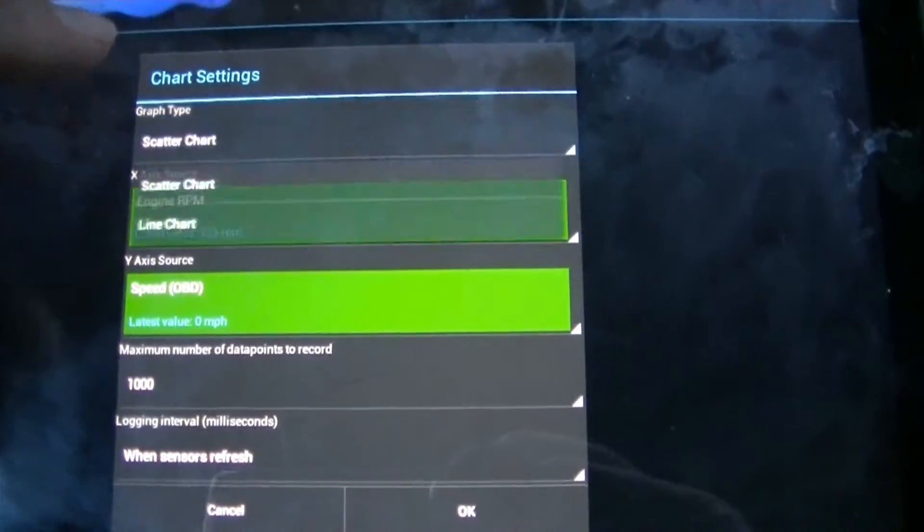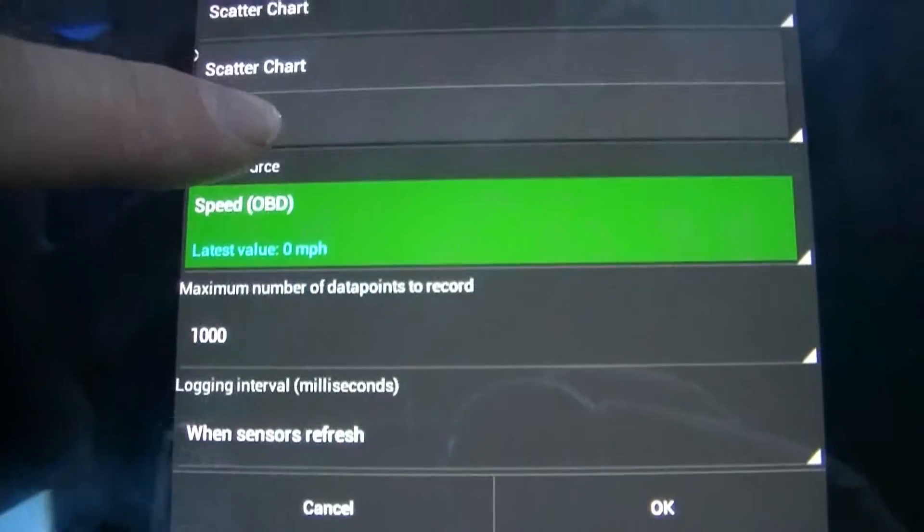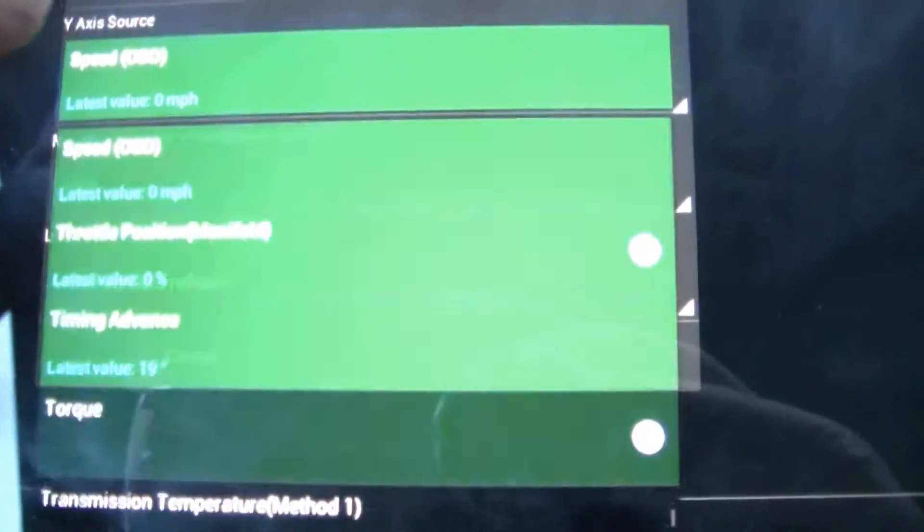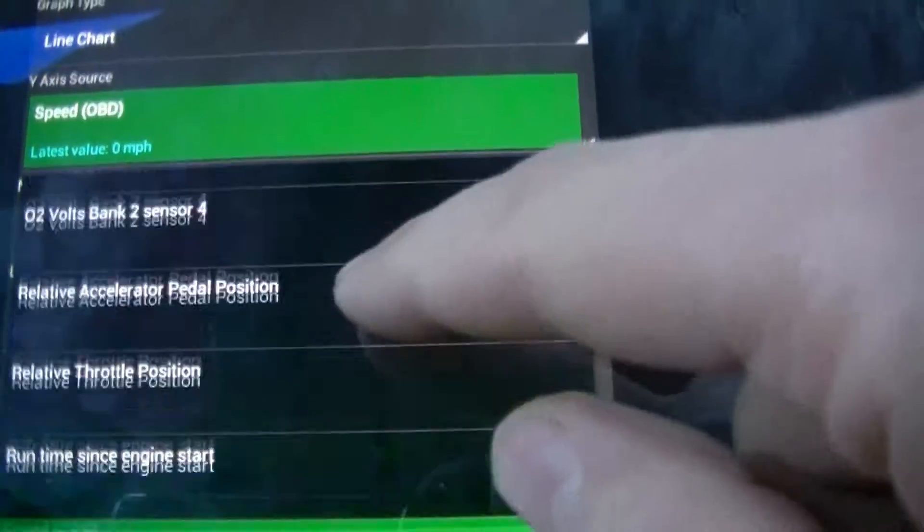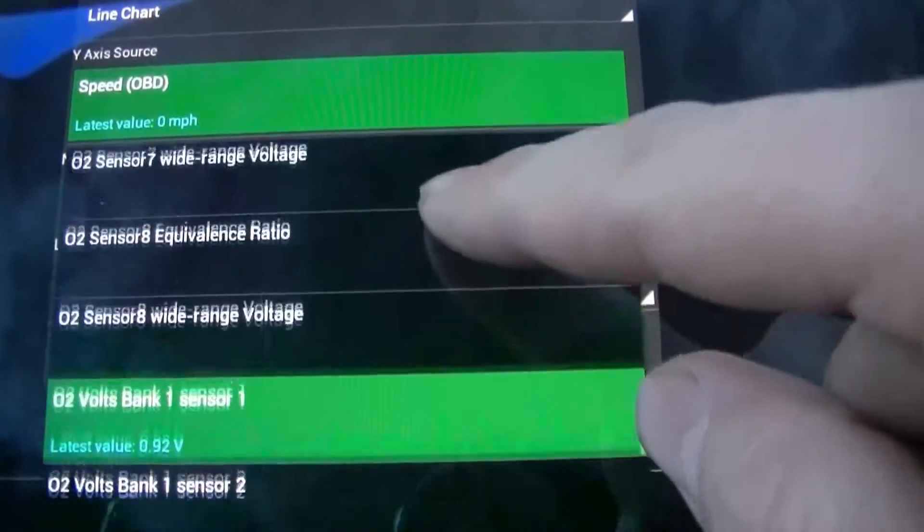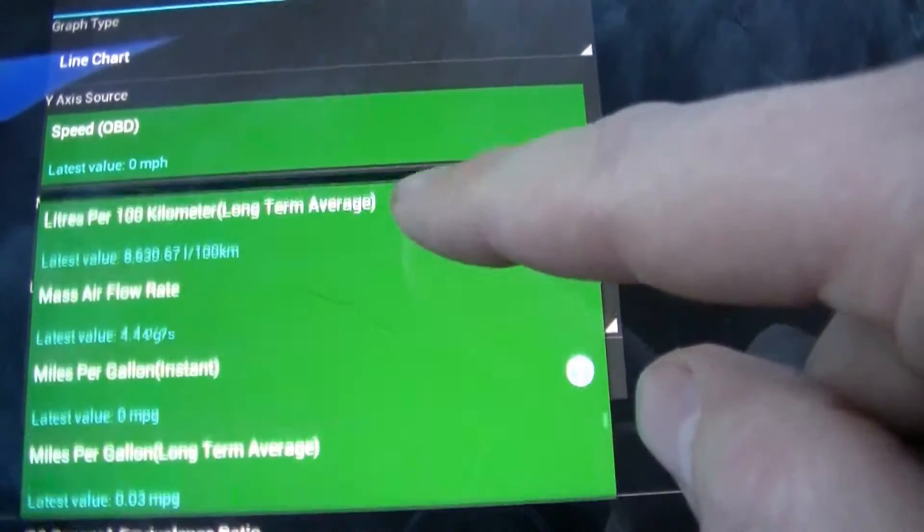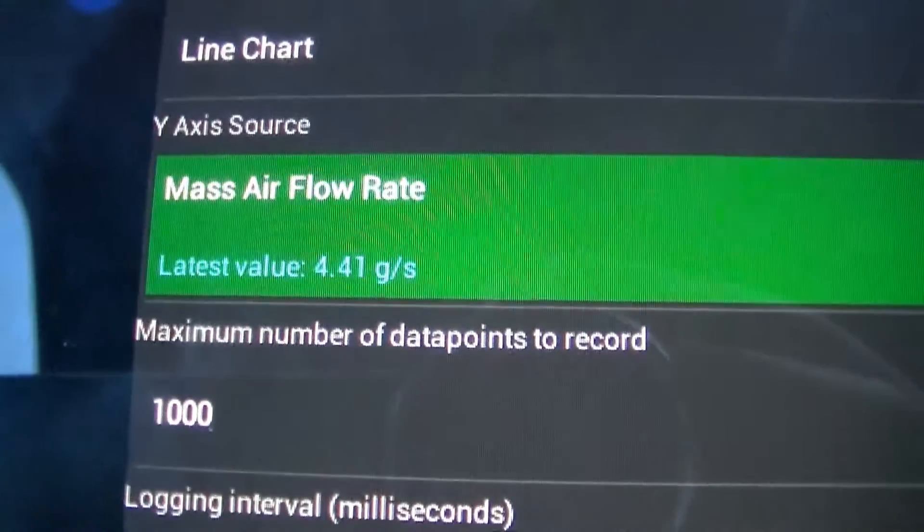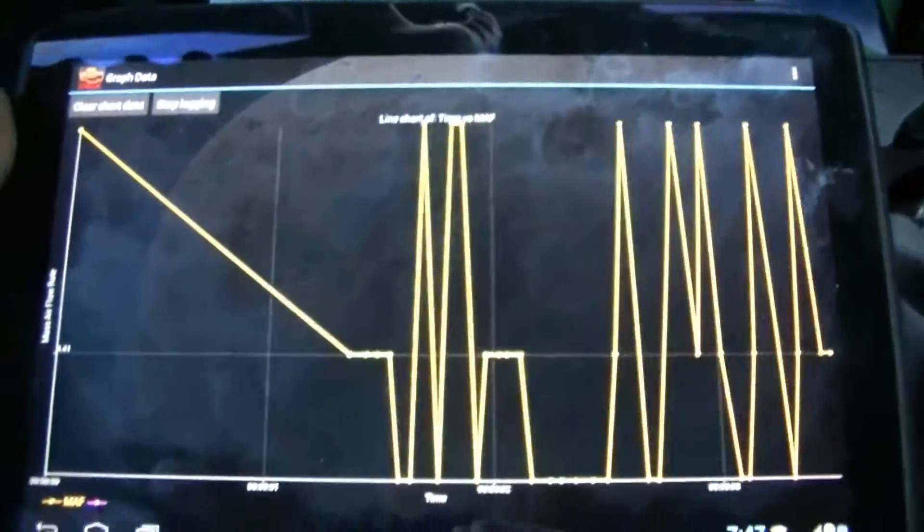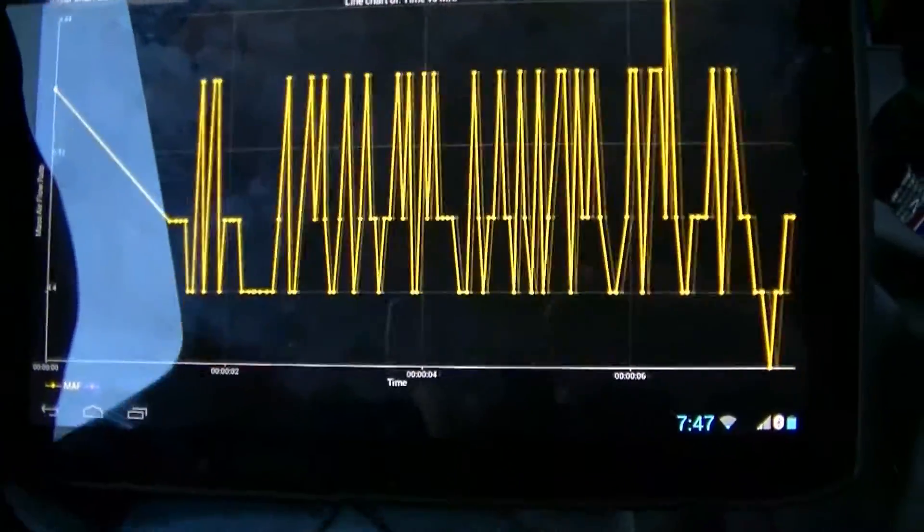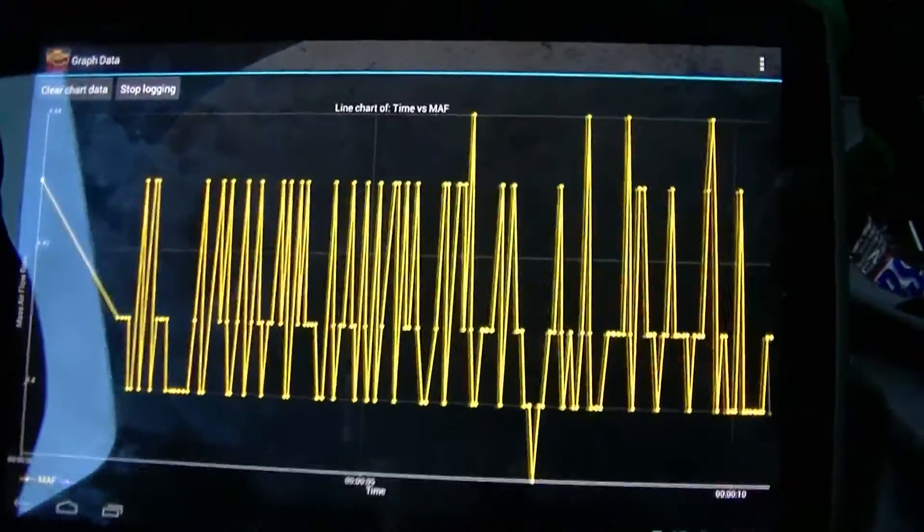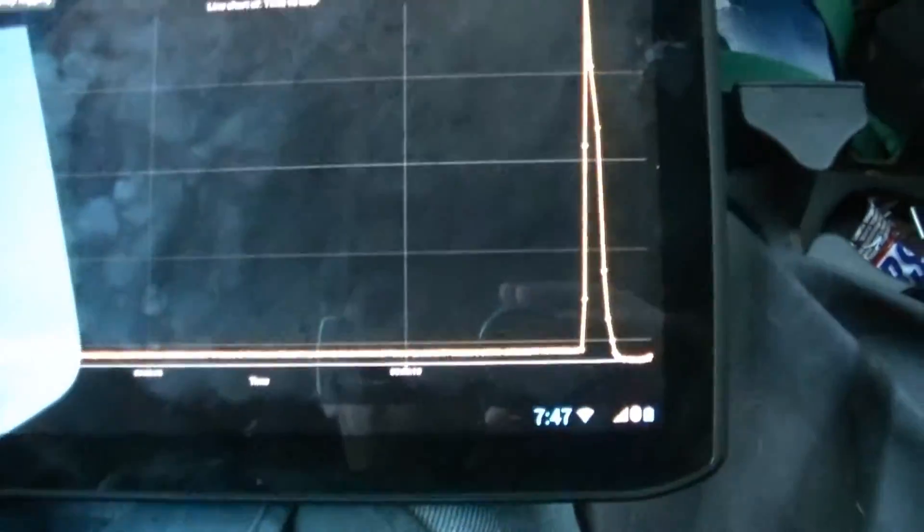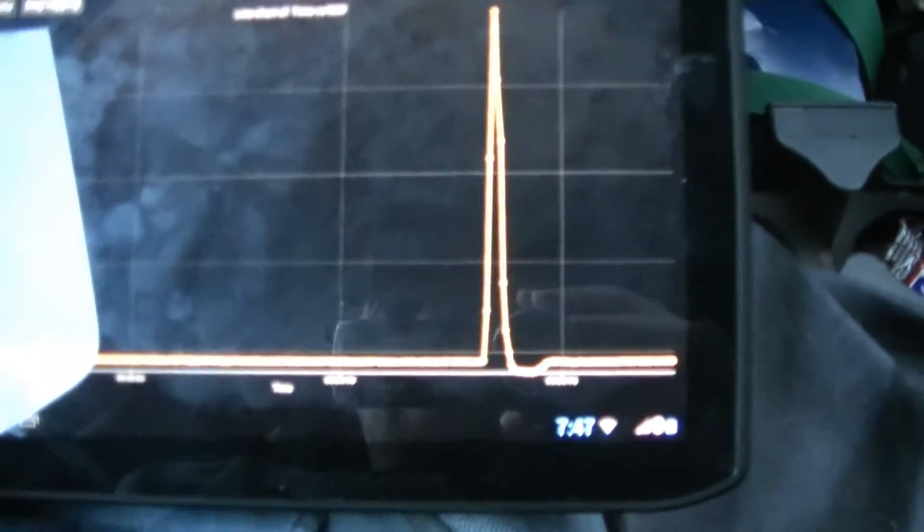I'm going to go to my mass air flow rate and I'm going to start logging. And you can see you get a big graph here with the log lines. Once I hit the throttle there, you can see the graph goes up.